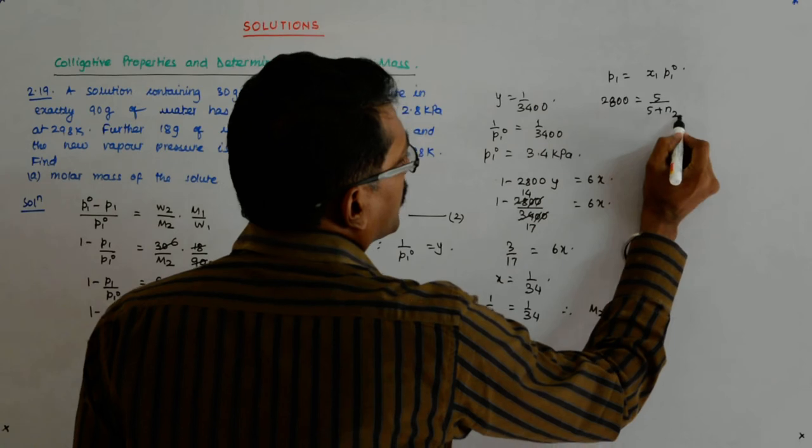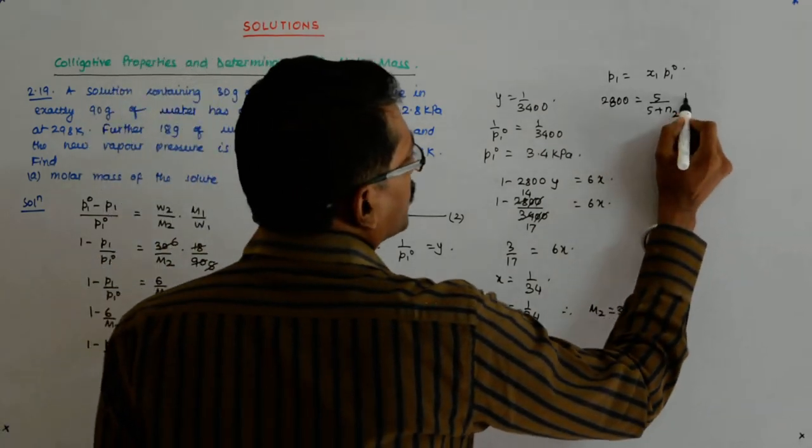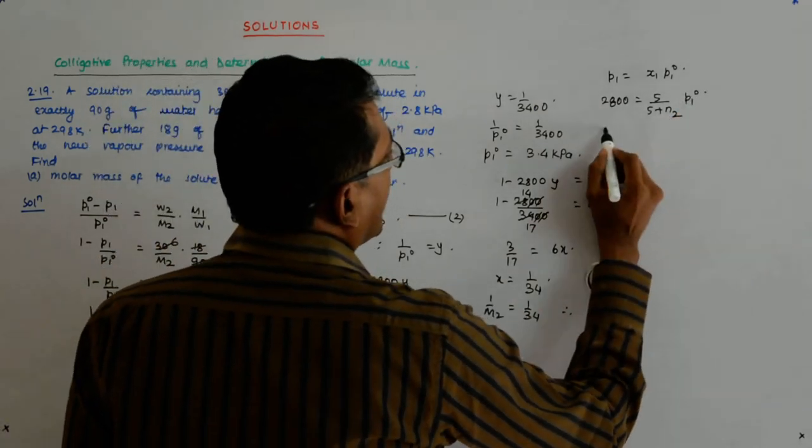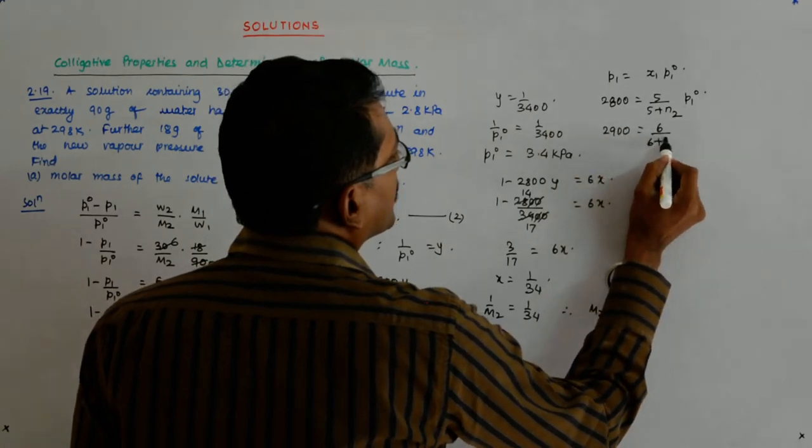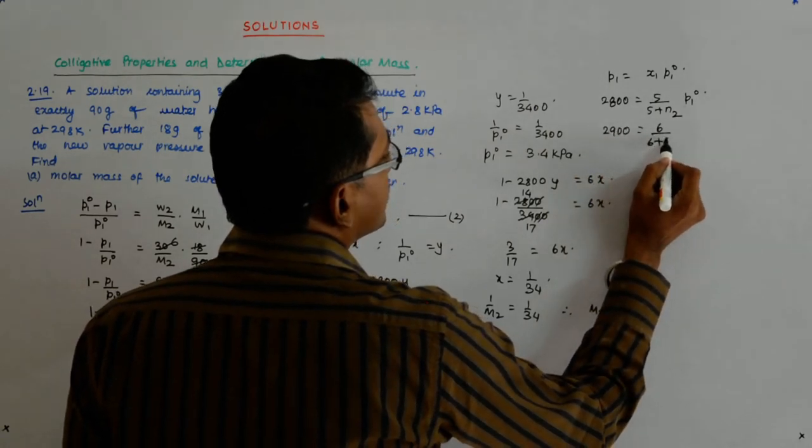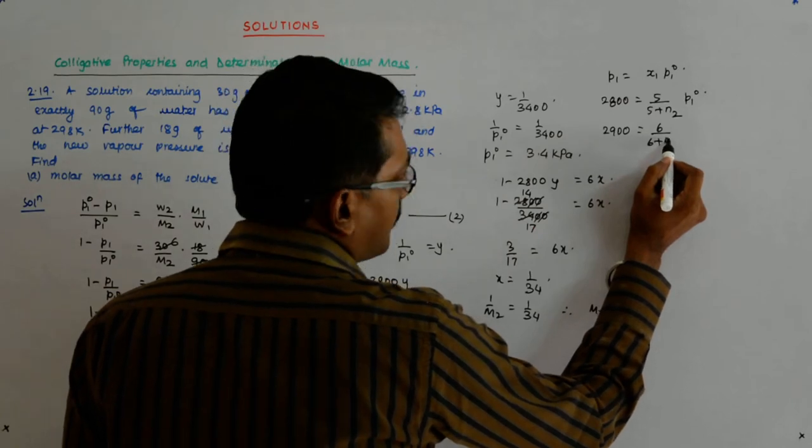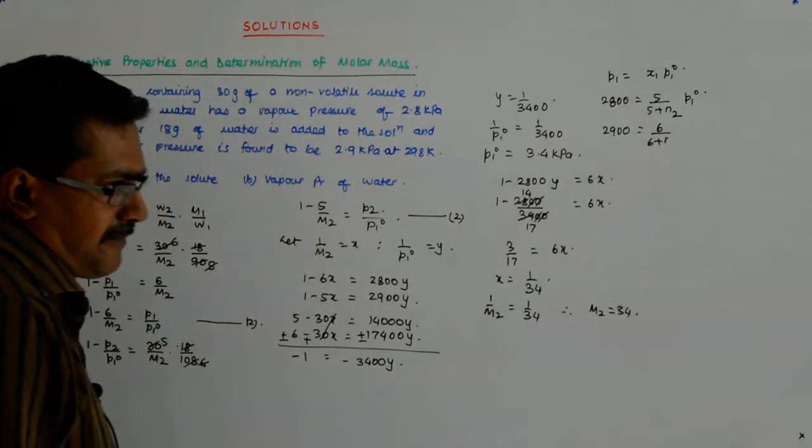It is the number of moles of the solute into P1_0. And the second one is 2900 is equal to 6 upon 6 plus. Only water is added.